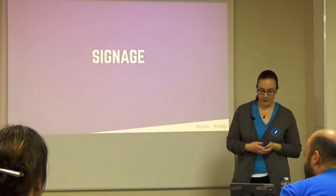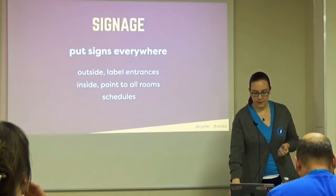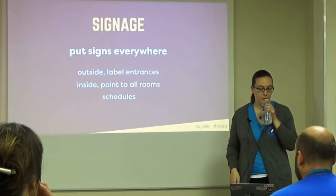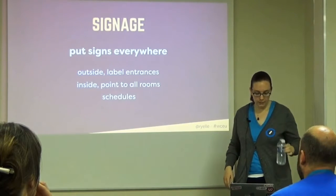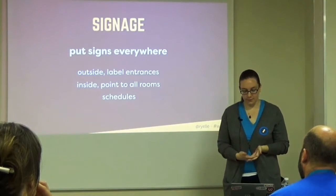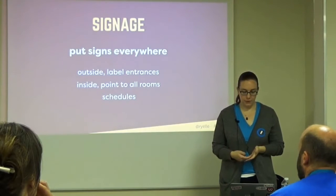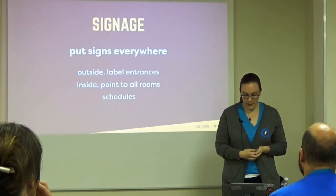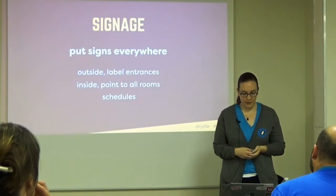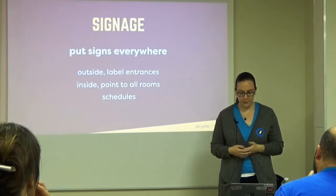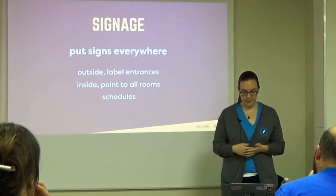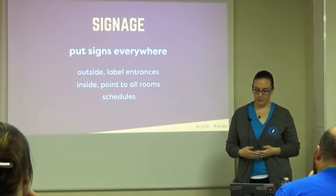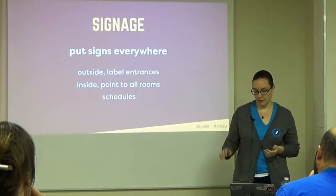I've mentioned signage a few times — put signs up everywhere. Your attendees will feel better if they can orient themselves. Someone outside your venue should immediately know how to get inside, and once inside, to registration, and then to the talk they want to see. If you're used to user experience or user flows, you want to do that for your event. Make sure you have accessible entrances called out too — that person should be able to get to their destination whether they use a wheelchair, crutches, or none of the above.